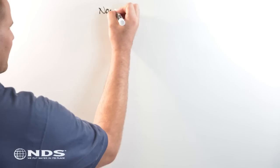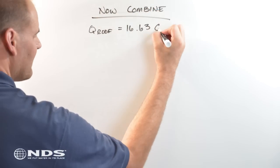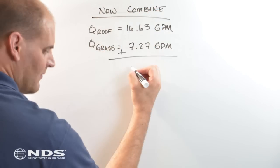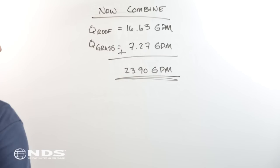The runoff from the roof was 16.63 gallons per minute, and the runoff from the grass was 7.27 gallons per minute. Adding these together, we get 23.90 gallons per minute draining from these areas.